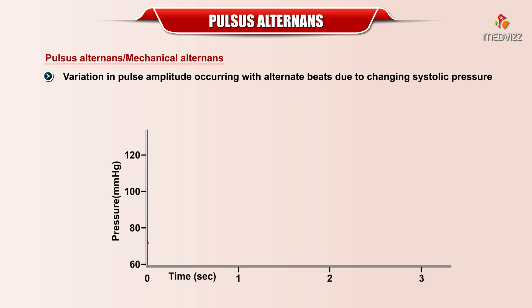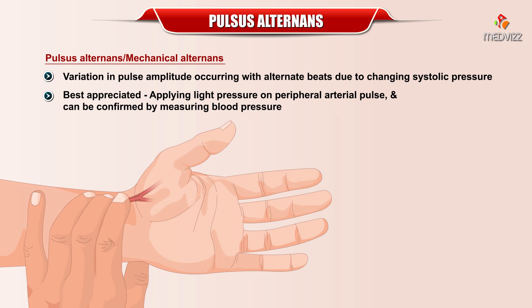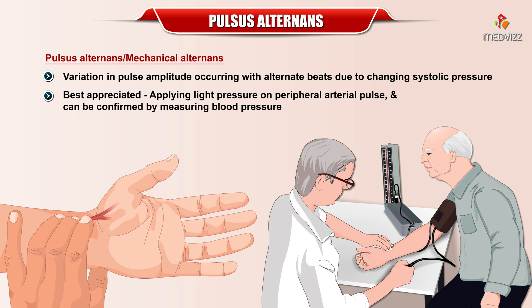Pulsus alternans, also termed mechanical alternans, is a variation in pulse amplitude occurring with alternate beats due to changing systolic pressure. It is best appreciated by applying light pressure on the peripheral arterial pulse and can be confirmed by measuring the blood pressure.